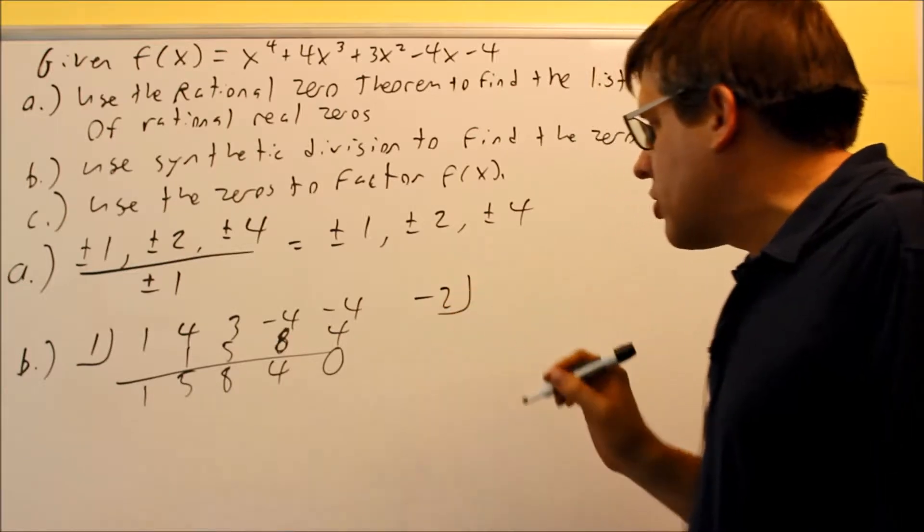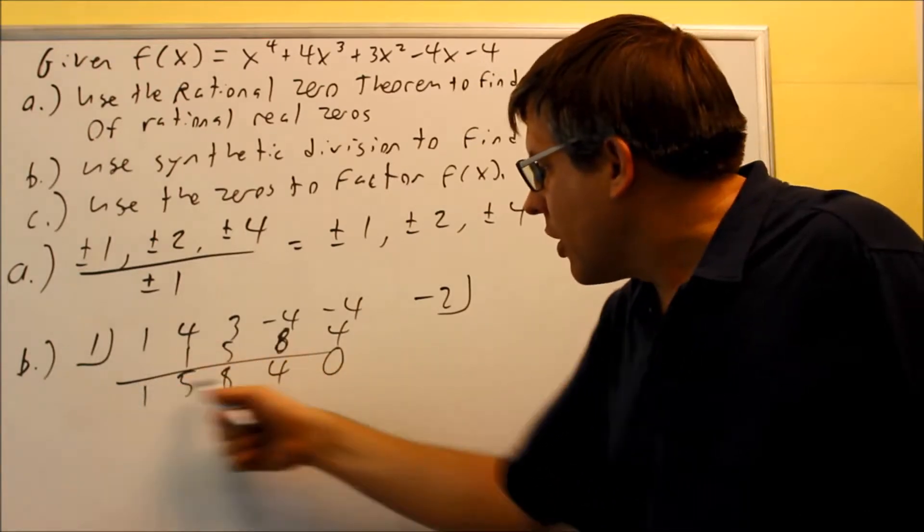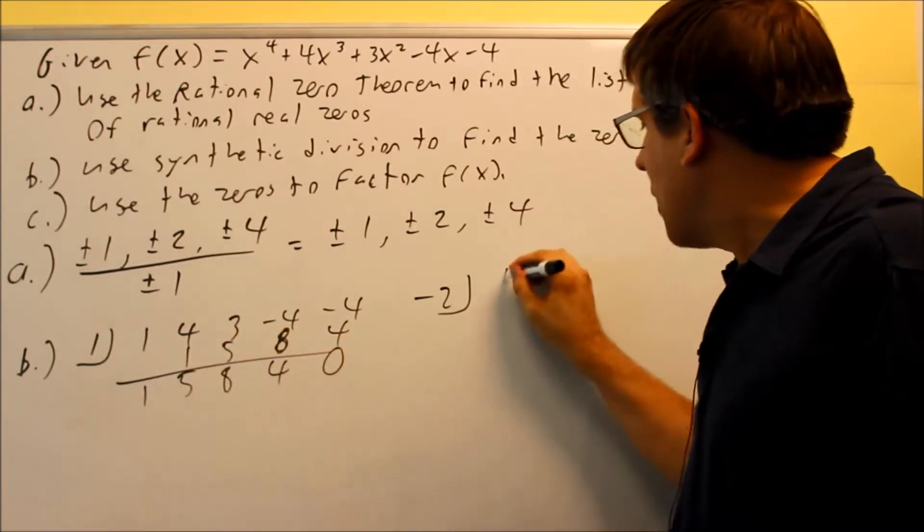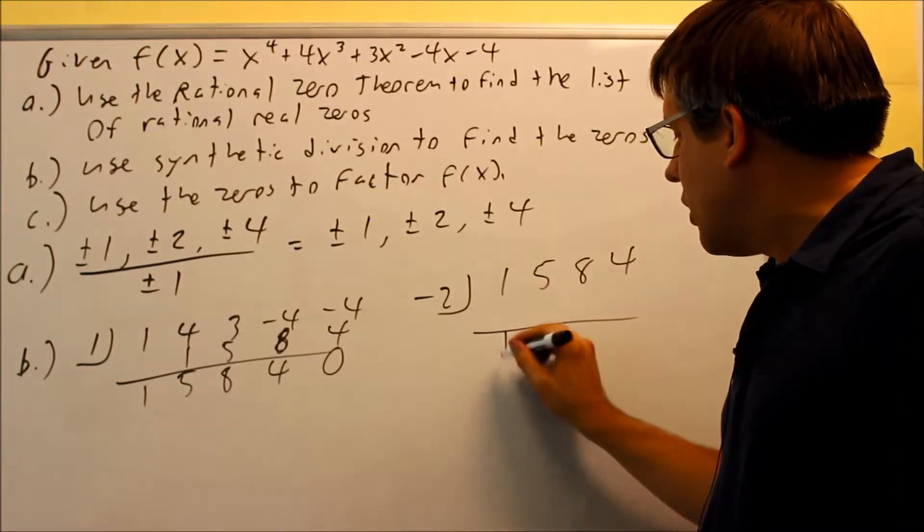Well, let's try another one. Let's try, you can try your negative two, negative one. Let's start with negative two and see if that works. I'm going to put, again, the same numbers you had before, one, five, eight, and four. And we're going to do synthetic here. Drop down the one, this is negative two.